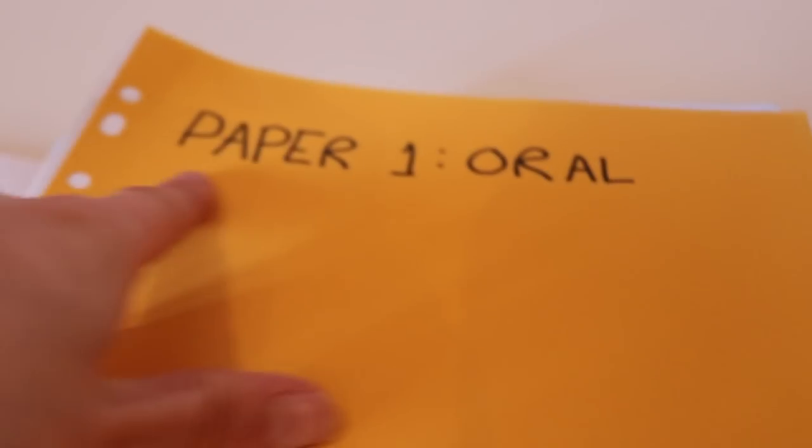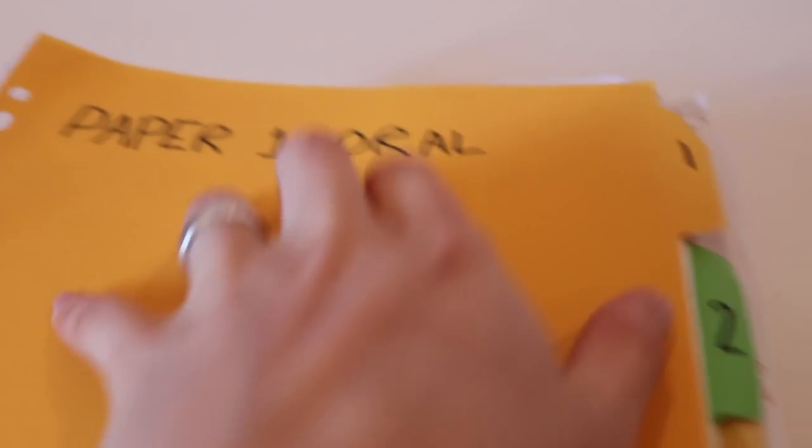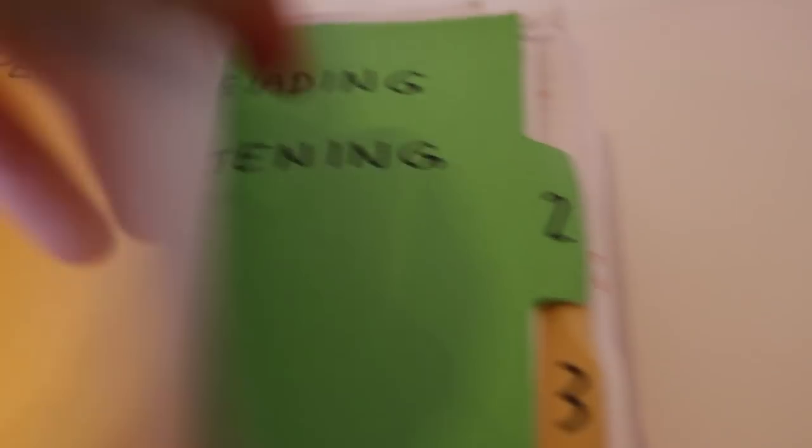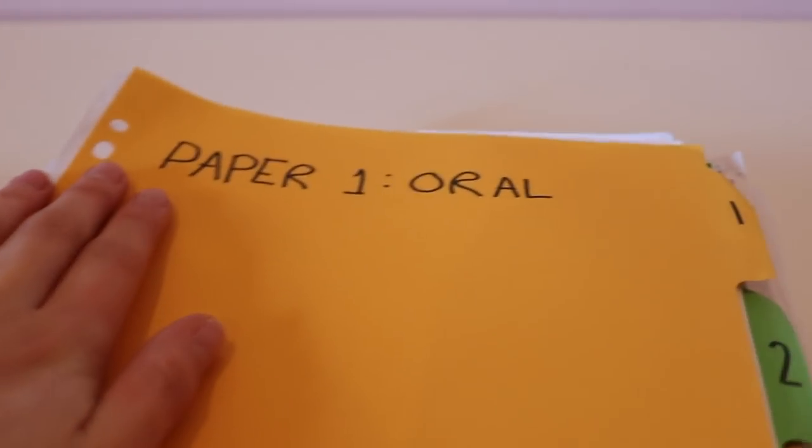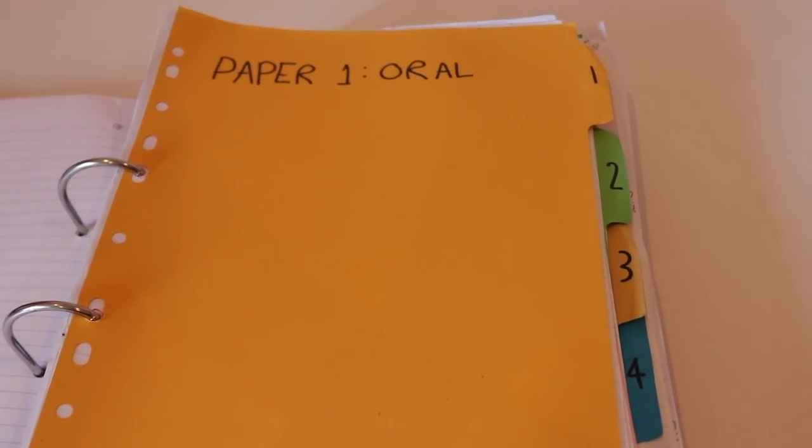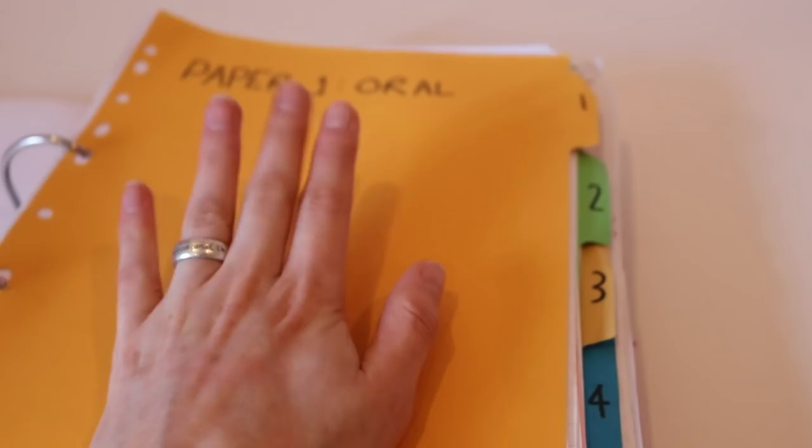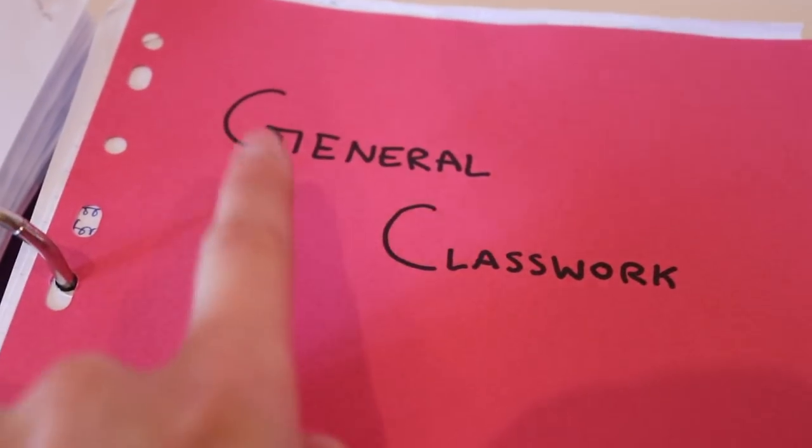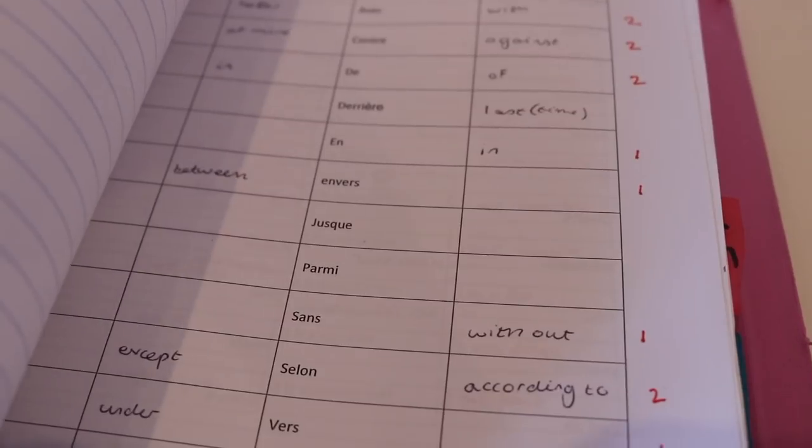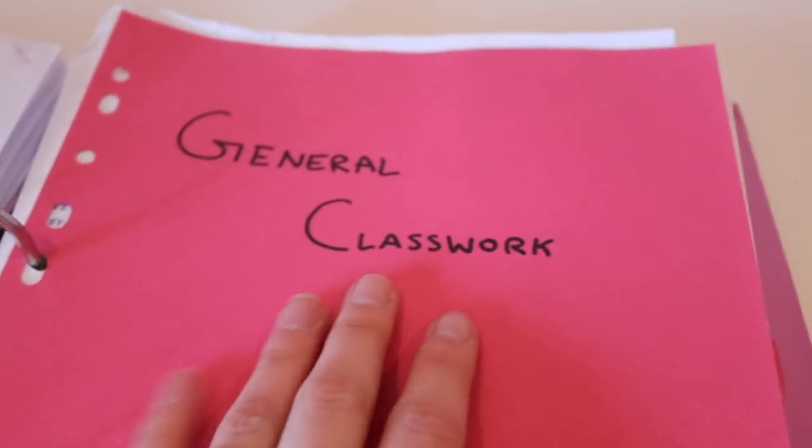But the way I ended up organizing this was to do with the papers. So section one is everything to do with paper one which is the oral, two paper reading listening, three writing usage, four topic and text. When you know you're basically learning for an exam, organizing by exam paper is the most efficient way to organize it.